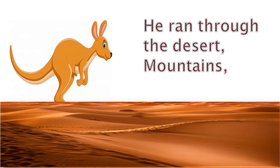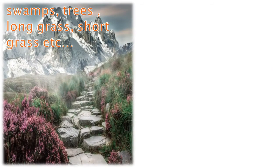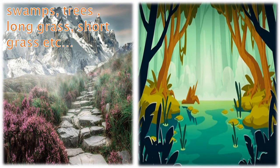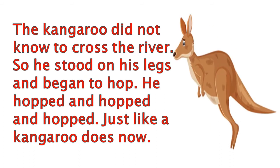Dingo chased the kangaroo through the desert and mountains. The kangaroo ran until his front legs ached or pained. Still the kangaroo continued running, and at last his back legs also started to ache. They reached a bridge. The kangaroo did not know how to cross the river, so he stood on his legs and began to hop — hop means to jump high. He hopped and hopped and hopped, just like a kangaroo does now.